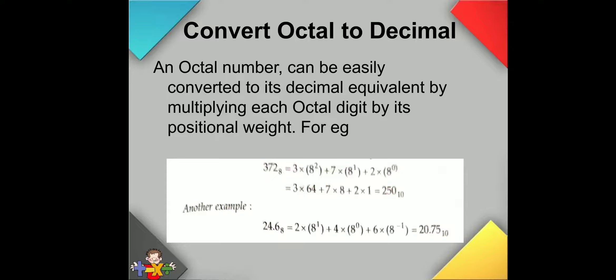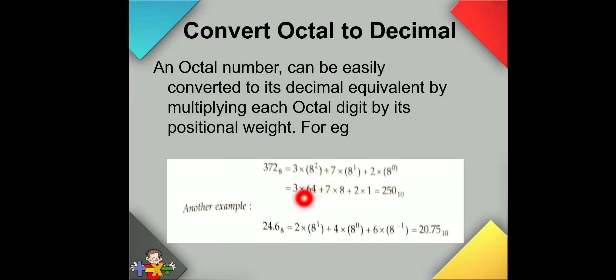Next is octal to decimal. In octal to decimal conversion, we multiply each octal digit by its positional weight with base 8. For example, our number is 372 to the base 8. We start from the right side to the left: 2 into 8 to the power 0, 7 into 8 to the power 1, and 3 into 8 to the power 2. We evaluate each term and add them together to get the decimal equivalent.